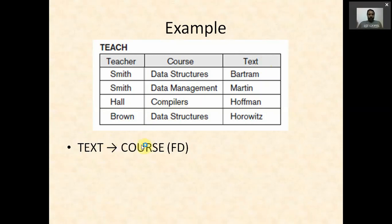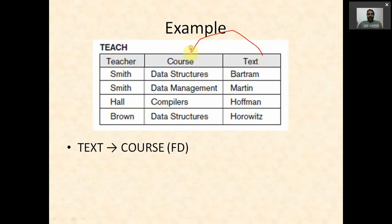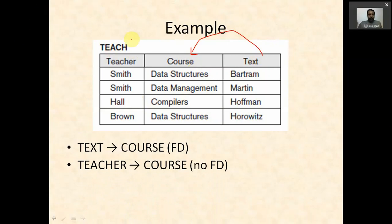If we check Text → Course, there is a functional dependency: Bartram writes only data structures, Martin writes only data management, Hoffman writes only compiler design, and Horowitz writes only data structures. So course is functionally dependent on text. However, Teacher → Course has no functional dependency because Smith appears in two rows with different course values — T1(X) equals T2(X) but T1(Y) does not equal T2(Y).